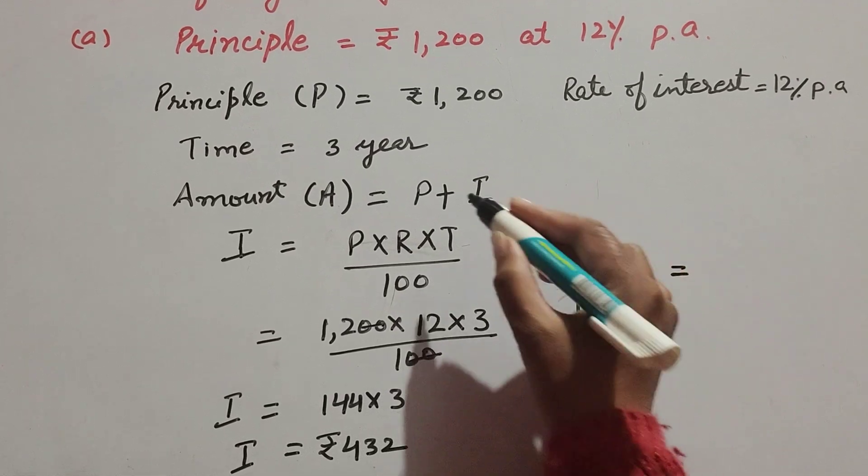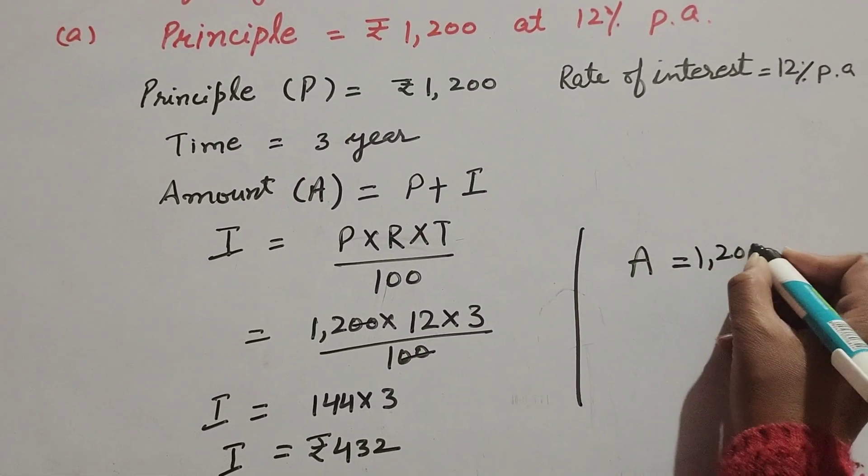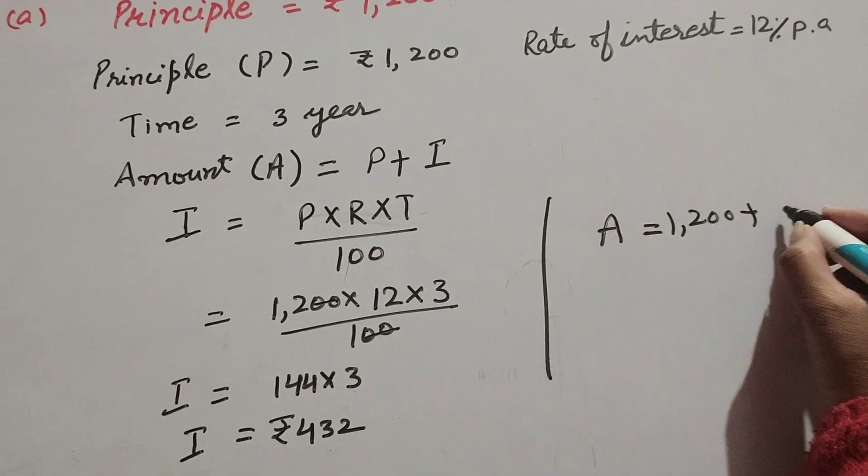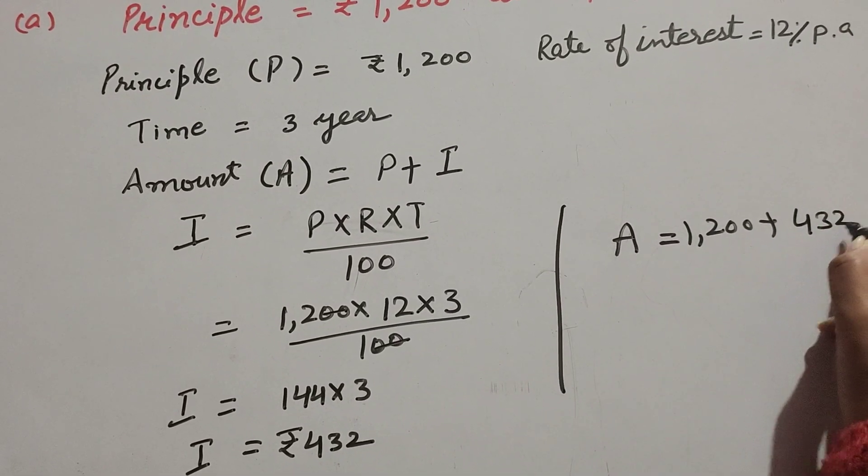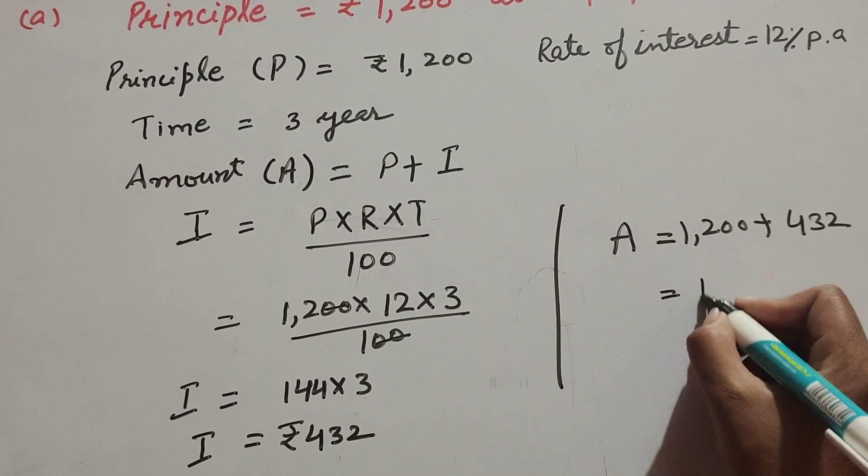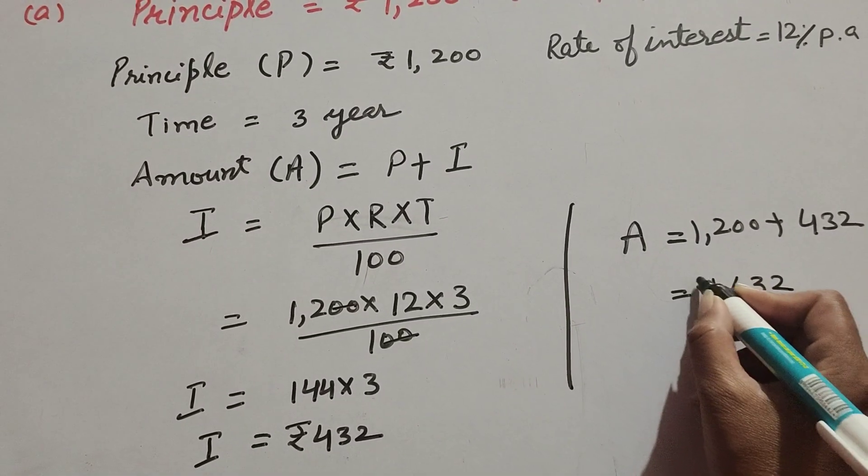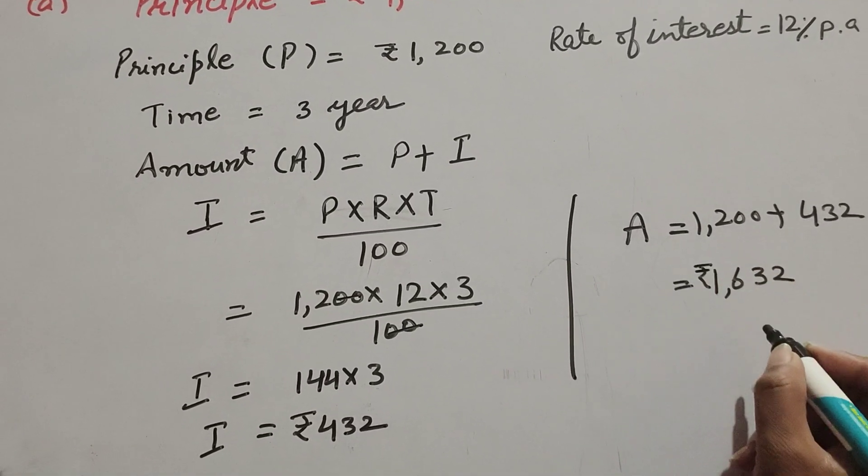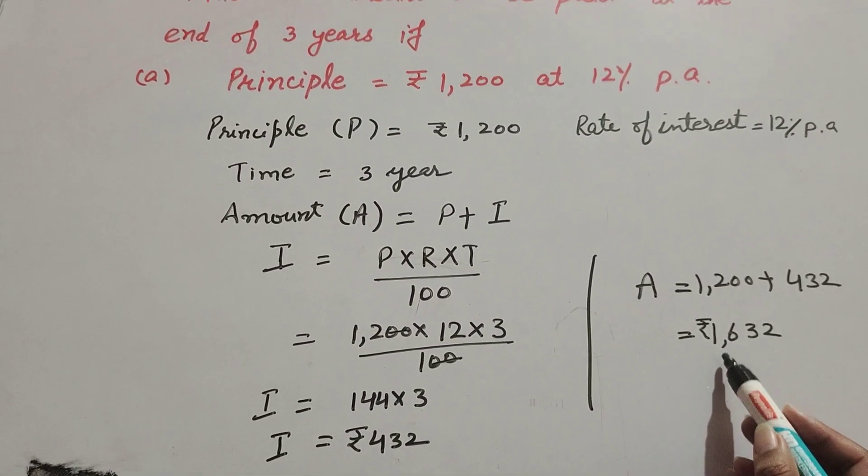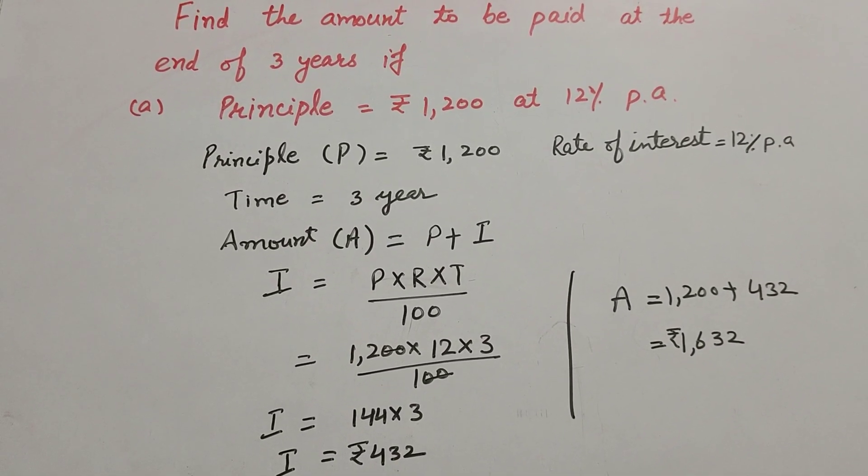A is equal to principal plus interest. Principal is equal to 1,200 plus interest, it is 432. So 1,200 plus 432 is equal to 1,632. So the amount that is paid at the end of three years is 1,632. Thanks for watching, like comment and share my video, subscribe my YouTube channel.